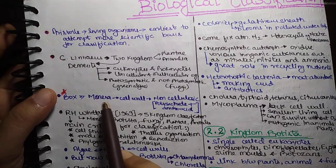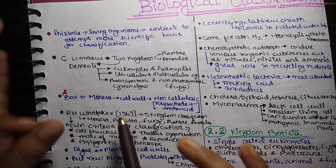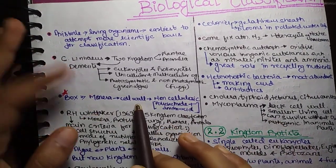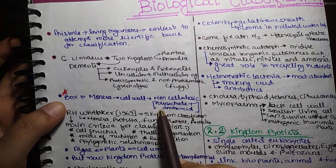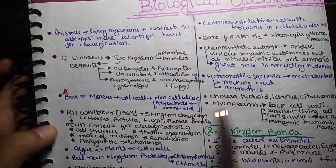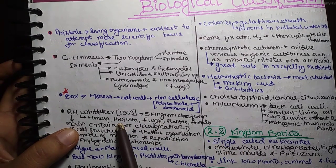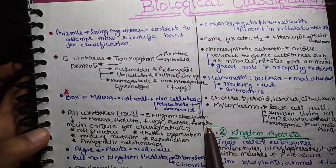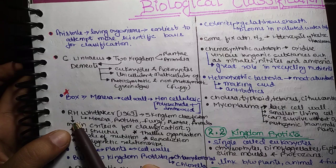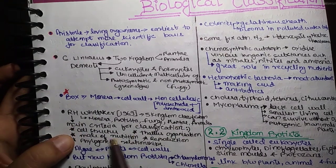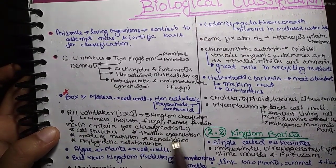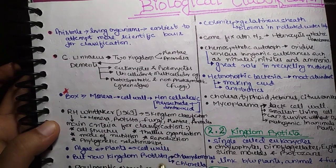The box given is the most important. Monera's Cell Wall, Non-Cellulosic Polysaccharide plus Amino Acid. R.H. Whittaker in 1969, 5 Kingdom Classification: Monera, Protista, Fungi, Plantae, Animalia. The main criteria for classification was Cell Structure, Body Organization, Mode of Nutrition and Reproduction, Phylogenetic Relationships.